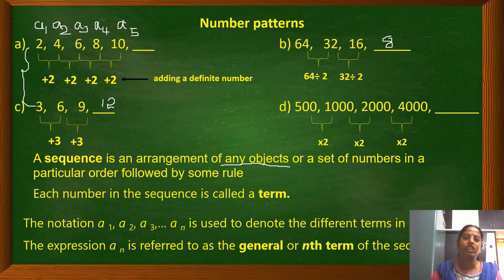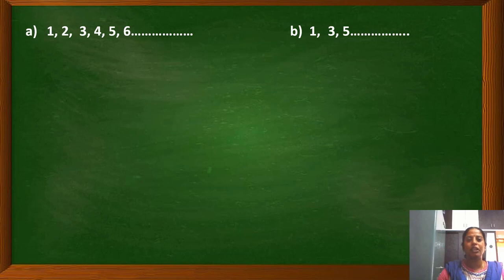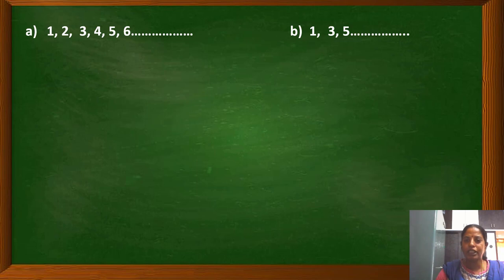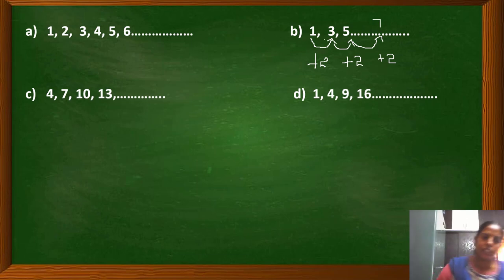In the staircase and card house examples, we are adding a definite number to get the next number. These types of sequences are known as arithmetic sequences or arithmetic progressions. For instance, the sequence 1, 2, 3, 4, 5, 6, 7, 8 is a sequence of natural numbers where every term increases by 1. Similarly, 1, 3, 5, 7 increases by 2 each time. These are examples of arithmetic progression.